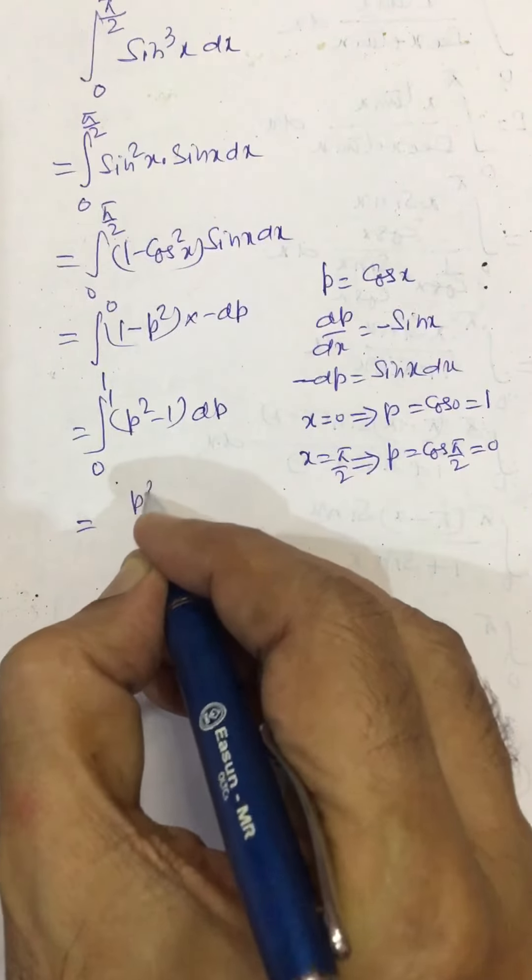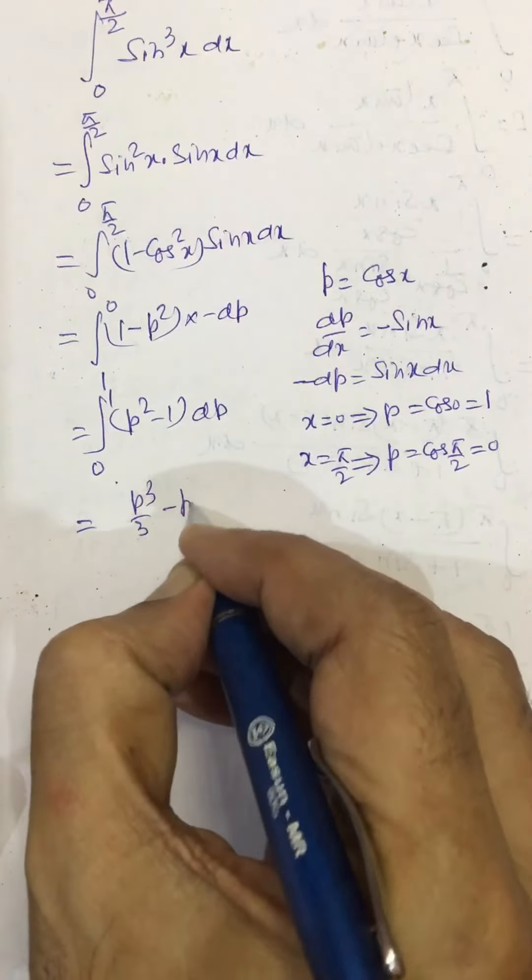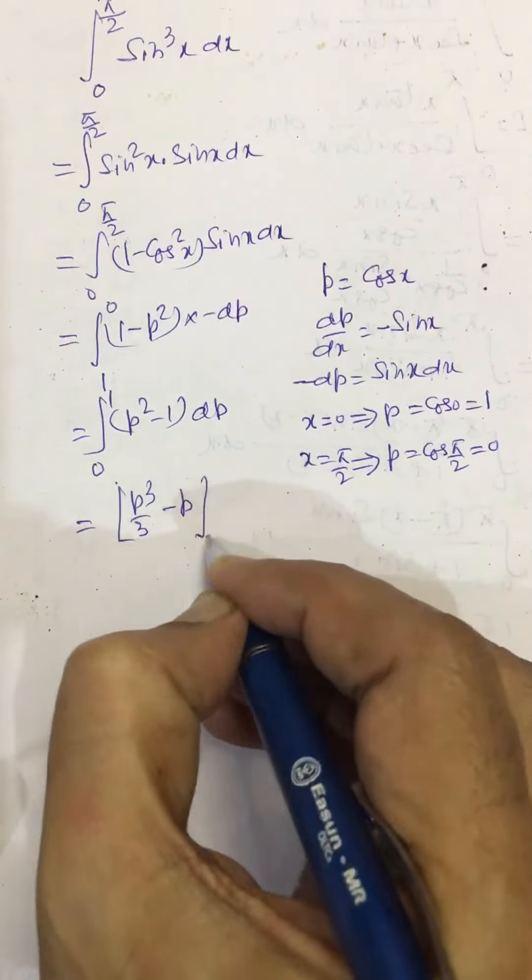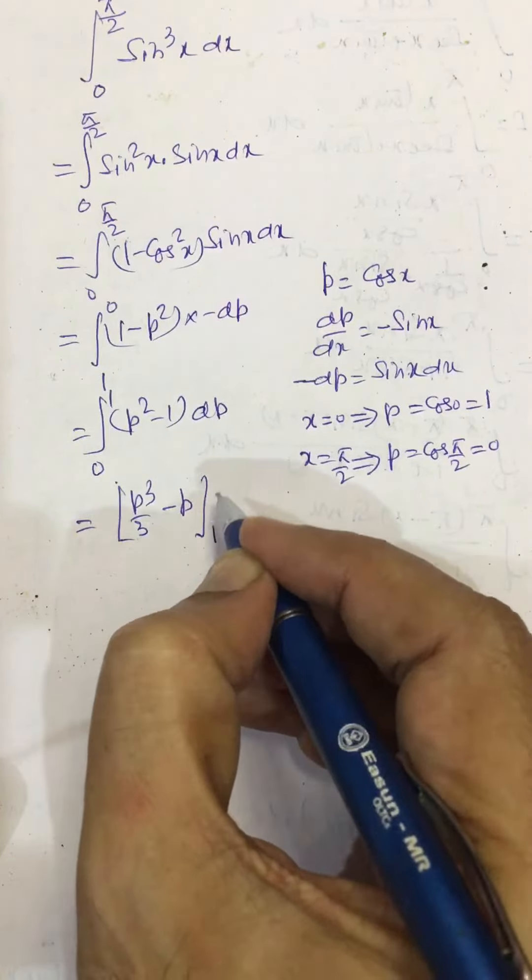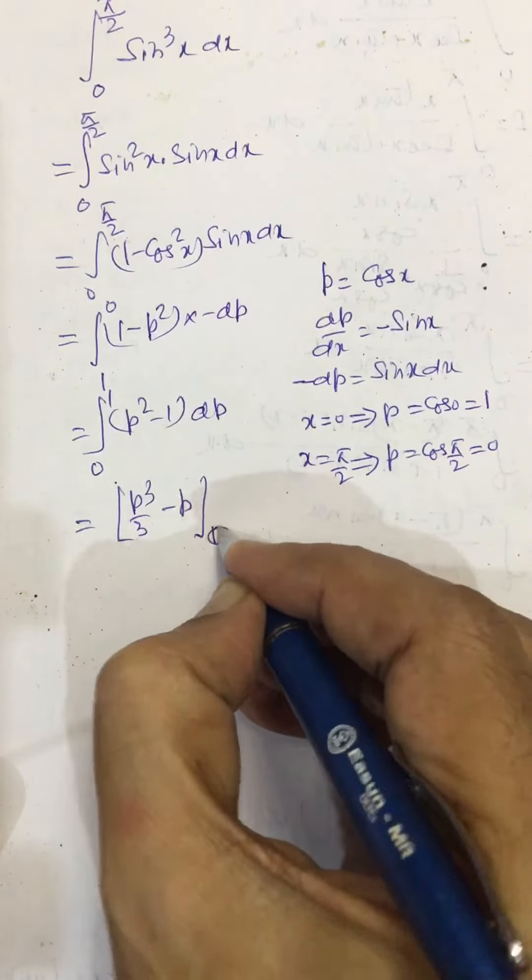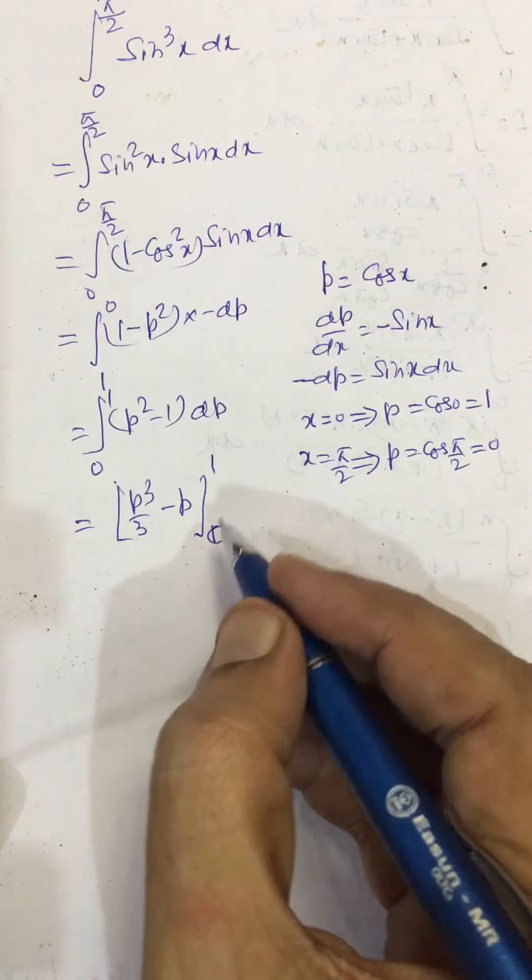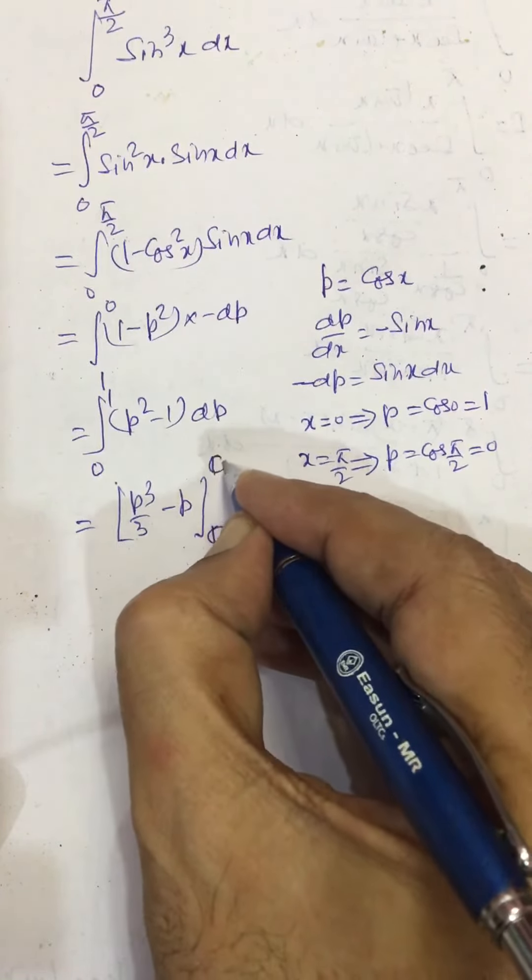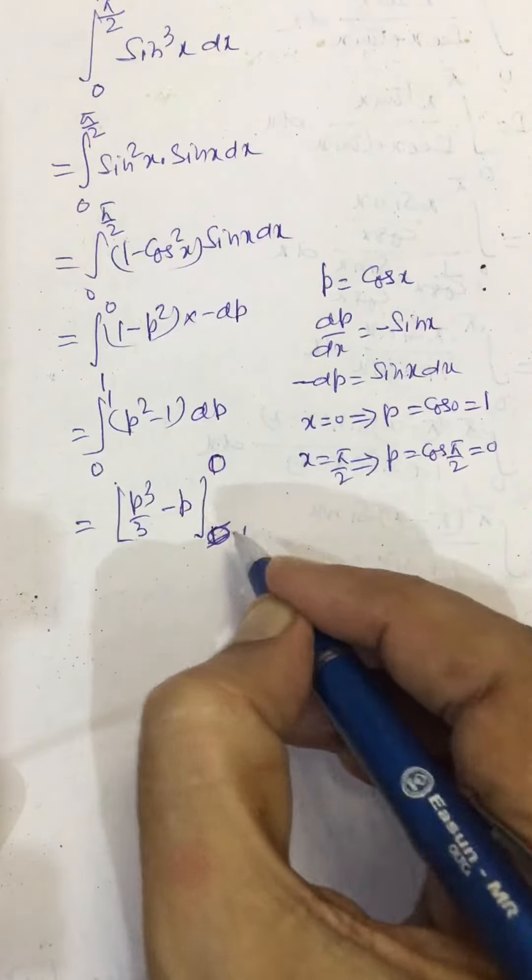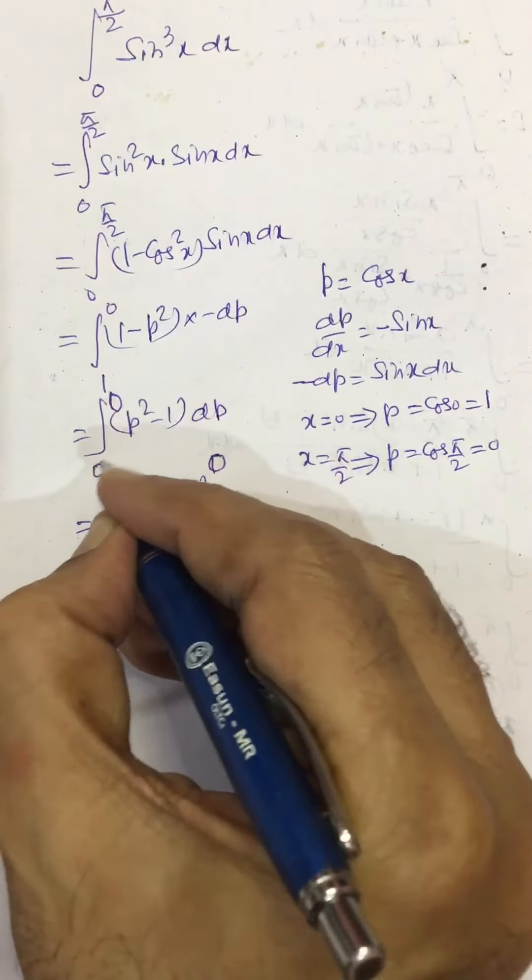Now integrating, we get p cubed by 3 minus p, and limits are from 0 to 1. No, this is 1 to 0. The limit is from 1 to 0.